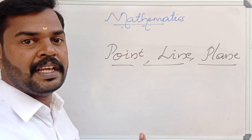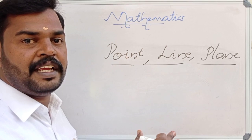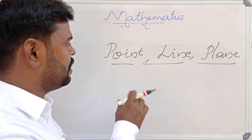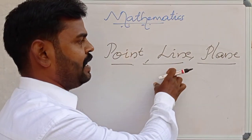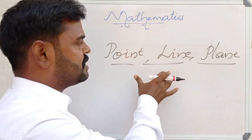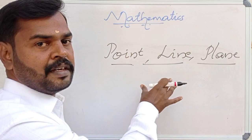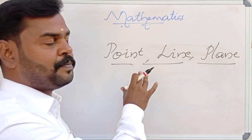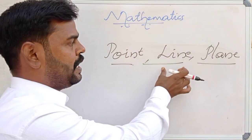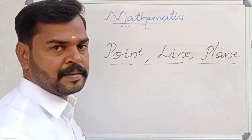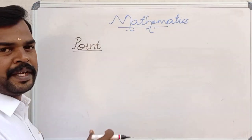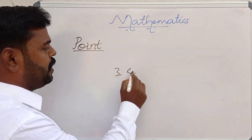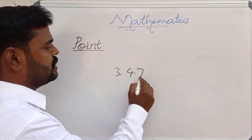In Euclid's famous book, the Elements, there are three undefined terms in mathematics. Those three undefined terms are point, line, and plane. These three words are undefined — there is no correct definition for the words point, line, and plane. Let us discuss point first. It is an undefined term.